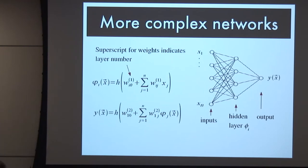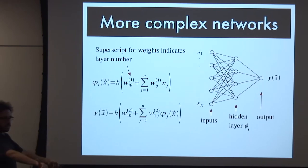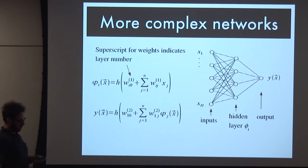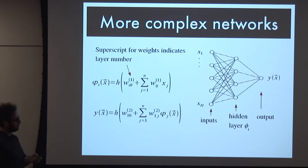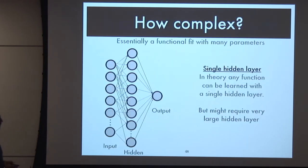You have two choices to make: one, how do I structure my network, and two, how do I search for the best weights given that network structure? A great question: do you gain anything from this over just having your activation function be a general polynomial in X?